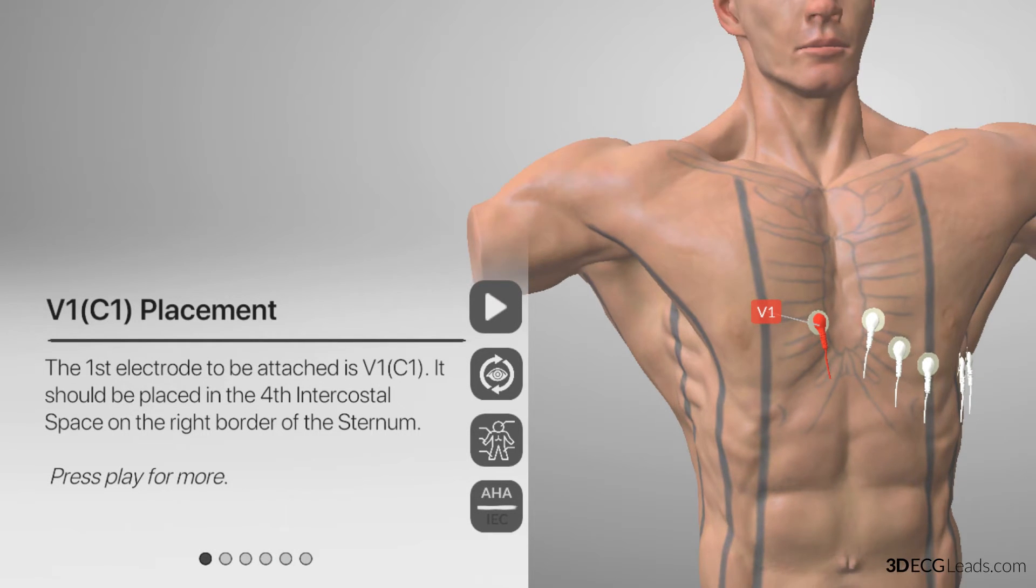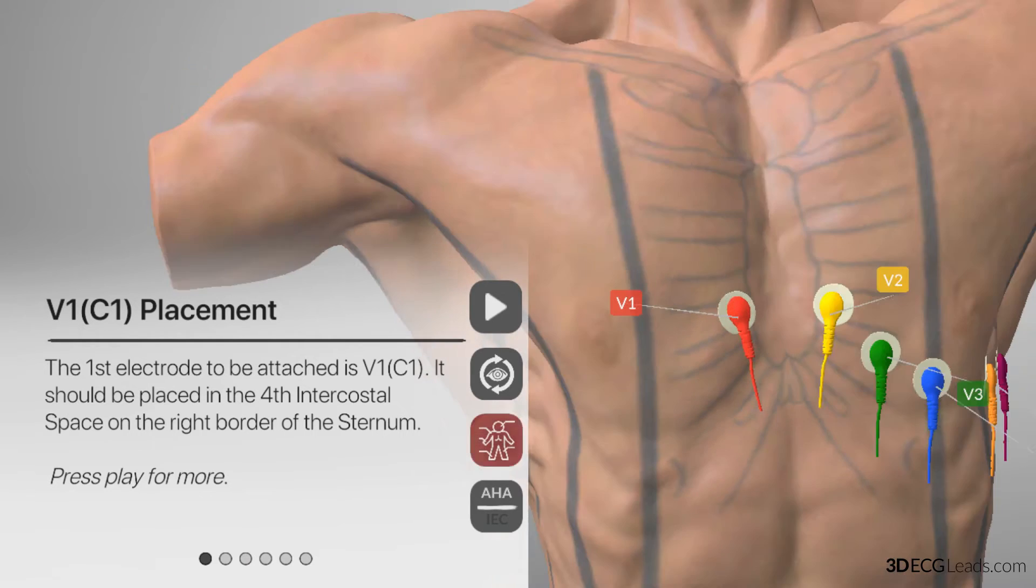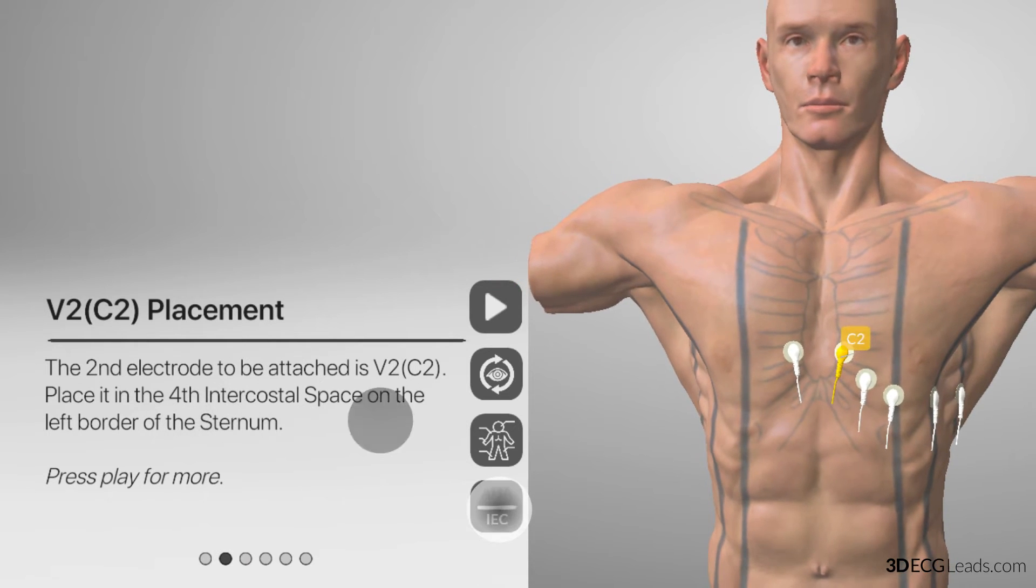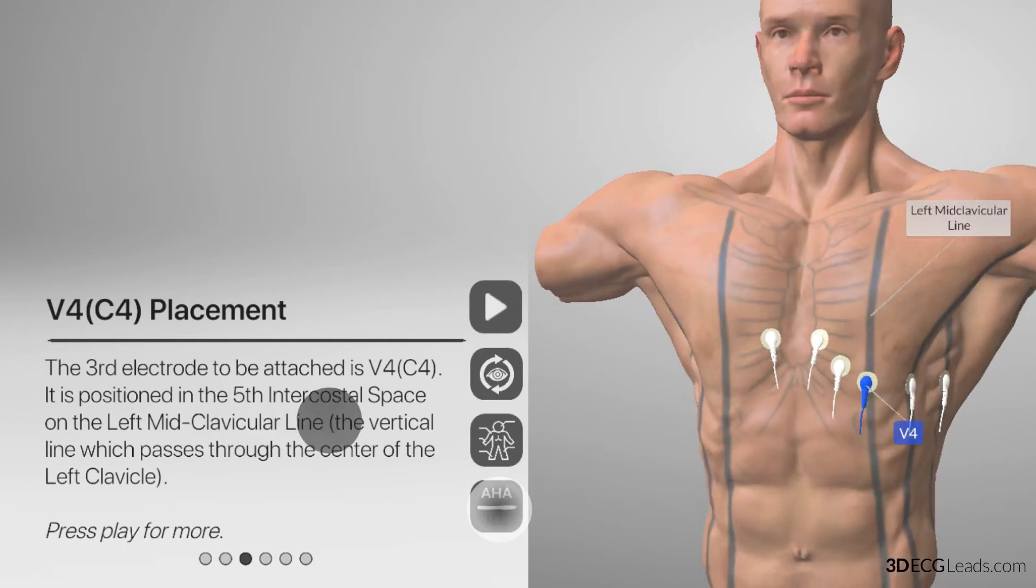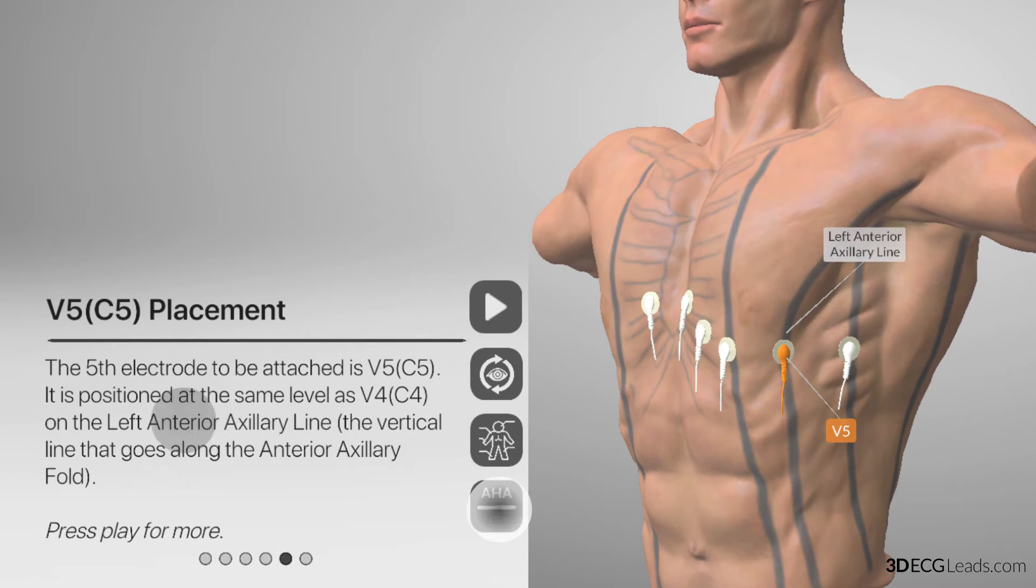As we switch between the systems, you can see the same lead has the same number. They are called V1, C1, V2, C2, V3, C3, V4, C4, V5, C5, V6, C6.